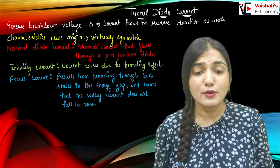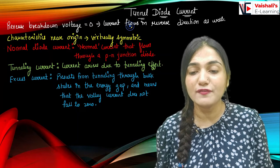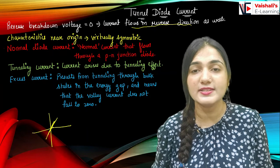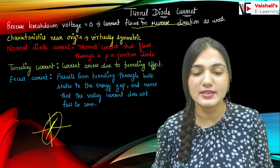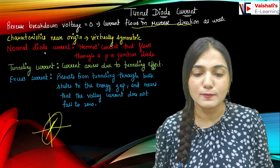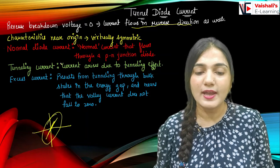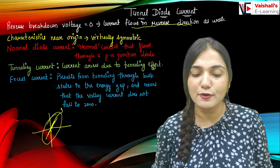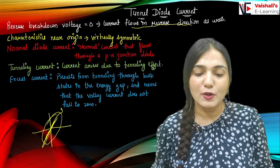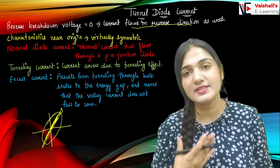Coming to the tunnel diode current. In reverse breakdown, voltage is equal to zero. When the reverse breakdown voltage is zero, current flows in the reverse direction as well. The characteristic near the origin is virtually symmetric — you can see the symmetric characteristics near the origin because the reverse breakdown voltage is zero and current flows in the reverse direction. In forward bias we have the normal diode current, whereas in reverse bias we have the tunneling current. We observe a symmetric graph at the origin because in both forward and reverse bias, current increases with increasing voltage.